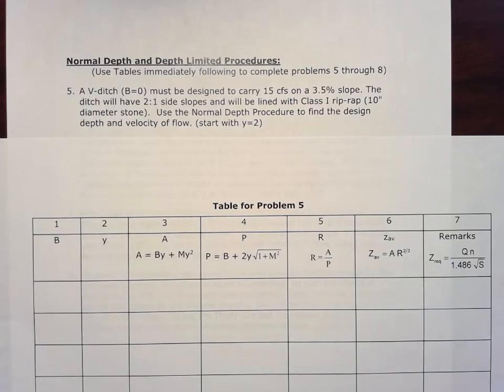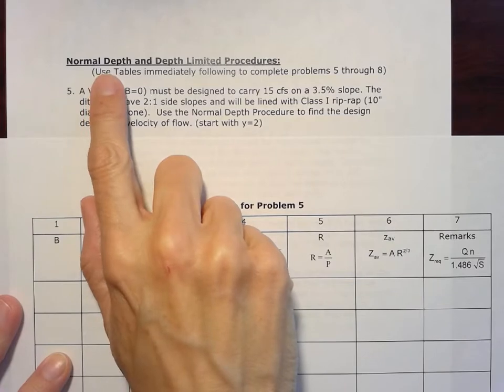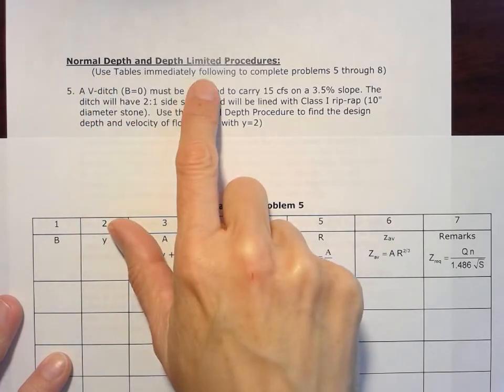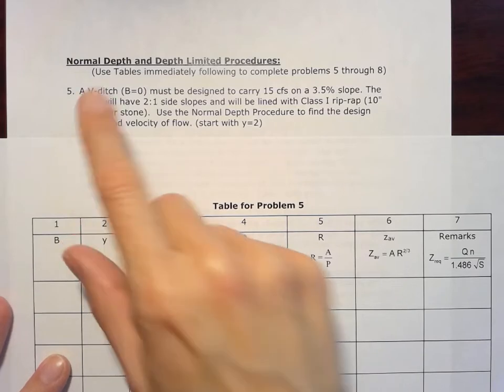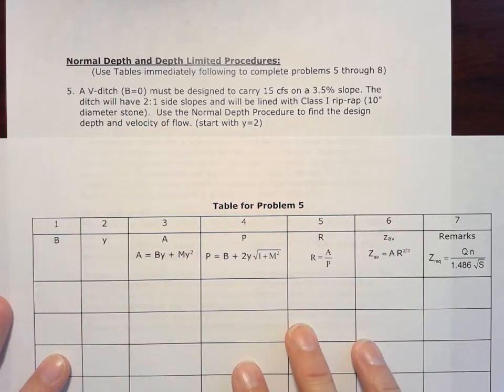All right, this next section of homework answers are going to show solutions using the normal depth and depth limited procedures. We're still in chapter four of hydraulics, now problem five. We've got some tables here to show the solutions.